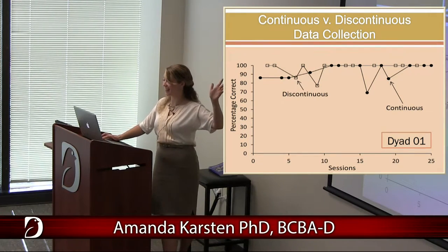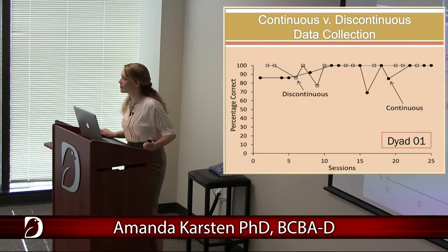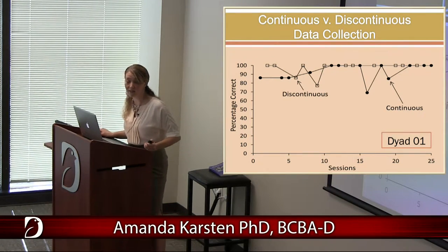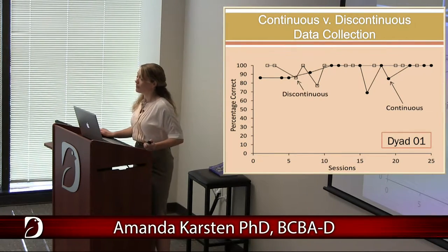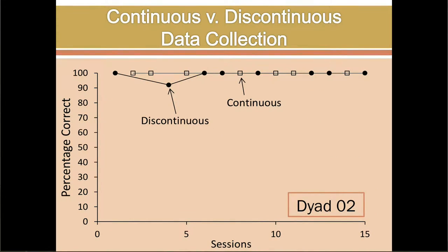Here's some data on practicality. The first graph shows treatment integrity during discrete trial instruction with parents — novice therapists working with their child with autism. We provided good training in advance and watched their delivery of teaching over time. The only difference between conditions: the open data path is discontinuous measurement — the parent only takes data on the first trial. The closed data path is continuous measurement — collecting data on every trial. With novice teachers, neither condition was associated with lower integrity. Collecting data on every trial didn't result in being overwhelmed or skipping other steps. A second parent showed very similar results — whether she collected first-trial-only or every-trial data, her integrity was high.